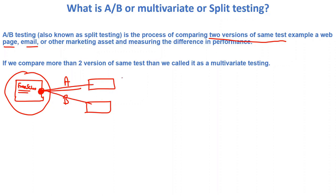So you take two different versions — version A and version B — and you compare these two versions. While using the comparison you will get some results showing how both web pages are performing, and on that basis you can find some analysis. This is called A/B testing.